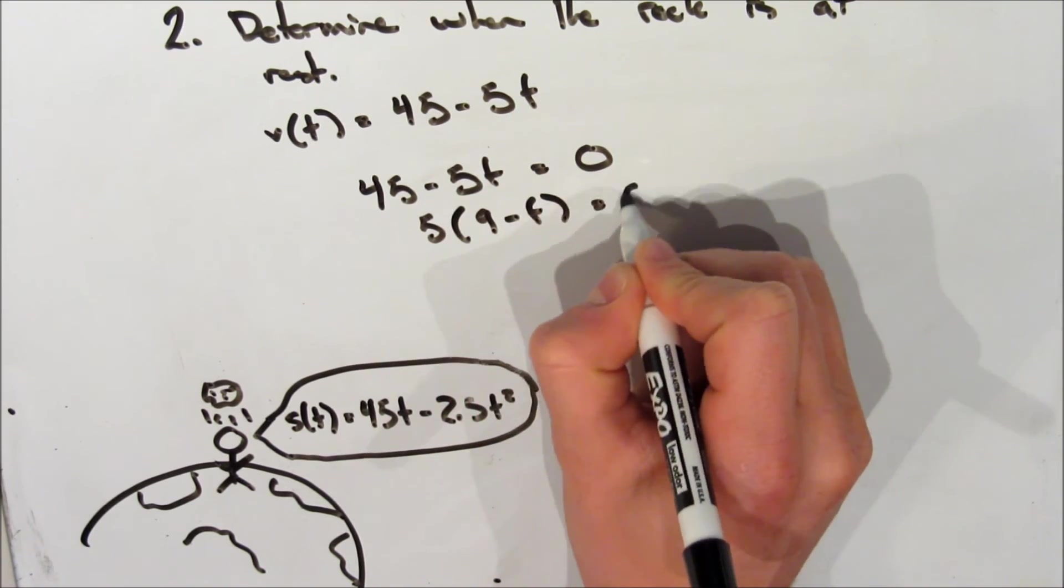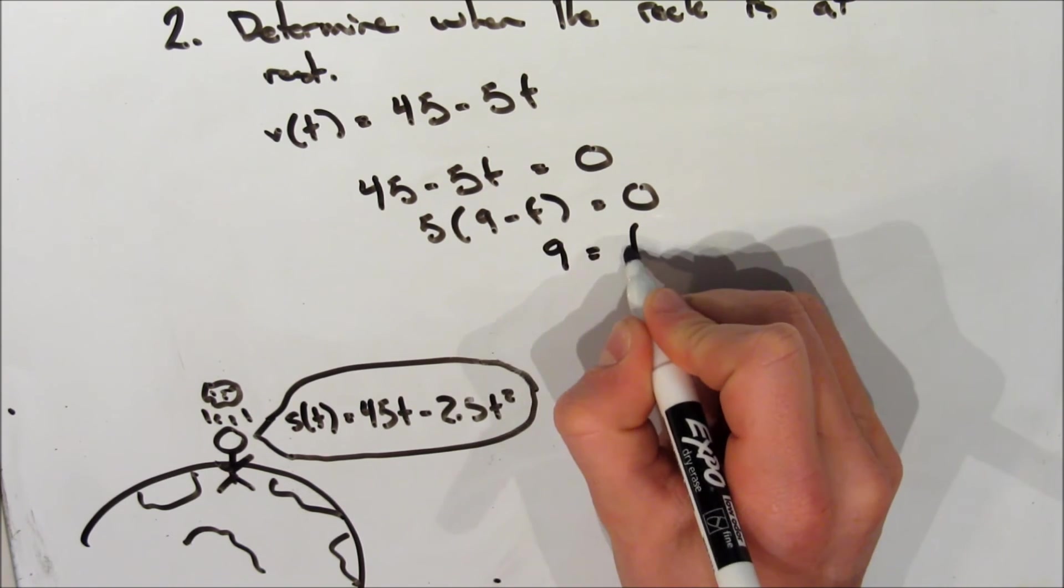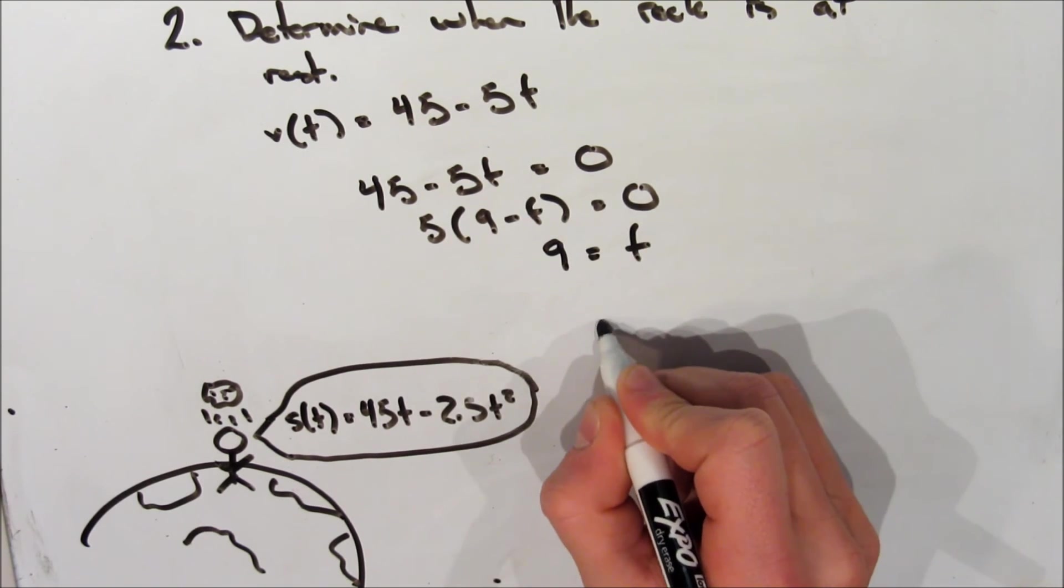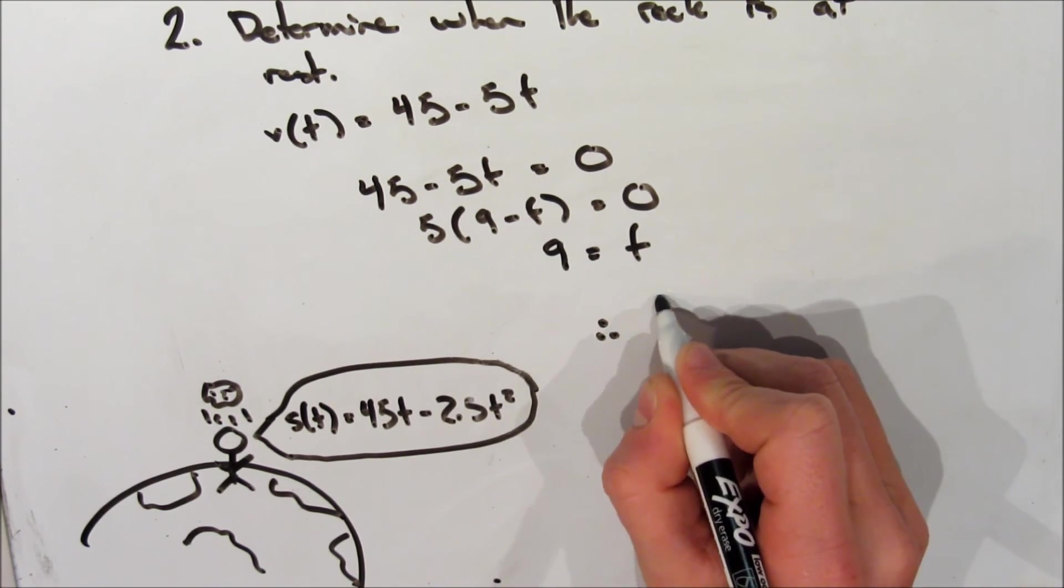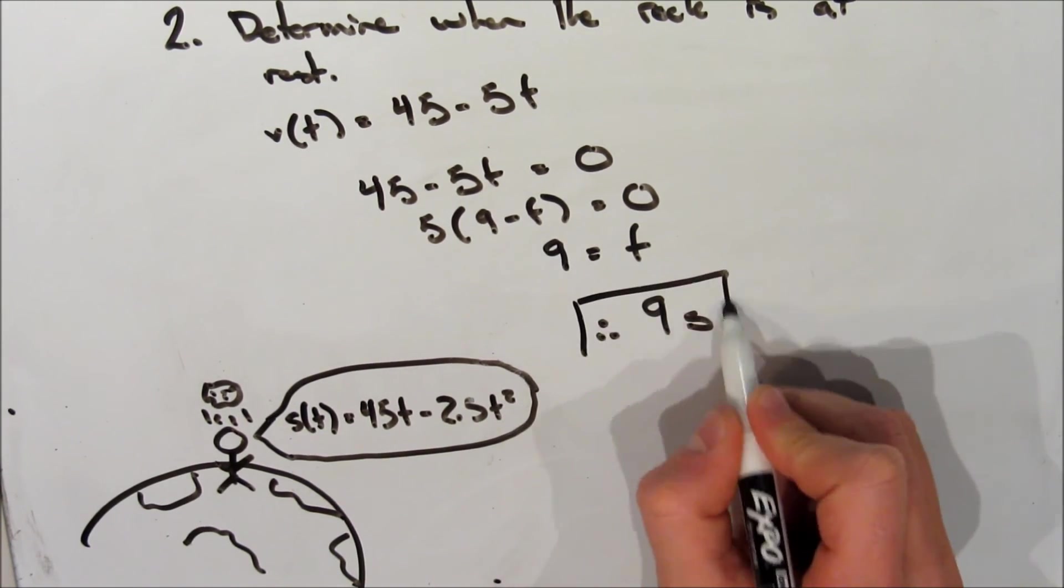Now we can factor out a 5 out of both terms and divide both sides by 5, which will give us 9 minus t equals zero. And so therefore t equals 9. And after 9 seconds, the rock will be at rest.